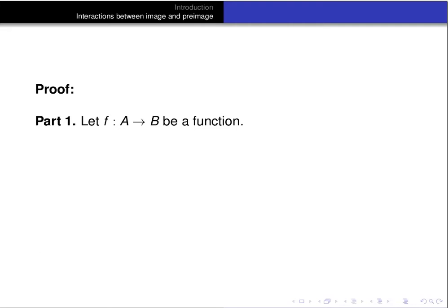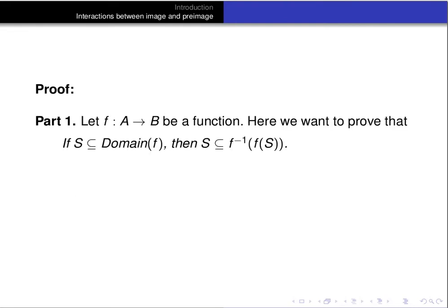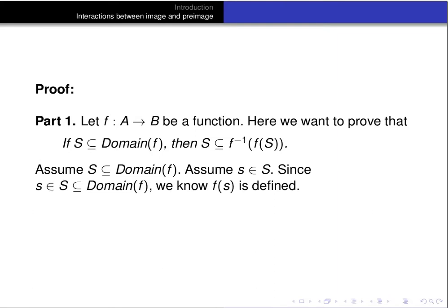To begin the proof of part 1, let f be a function from A to B. Our goal is to prove that if S is a subset of the domain of f, then S is a subset of the pre-image of the image of S. Assume S is a subset of the domain of f, and let little s be an element of the set S. Our goal is to prove that little s is an element of the pre-image of the image of S. Since S is a subset of the domain, any element of S is also in the domain, so f(s) is defined. The value f(s) is an element of the image of S under f, by the previous theorem.